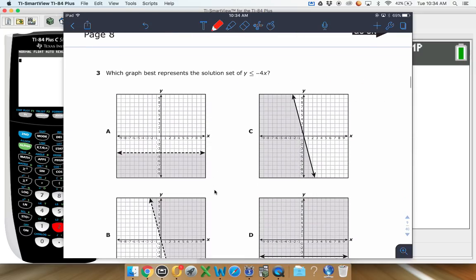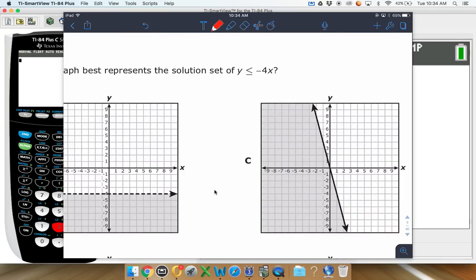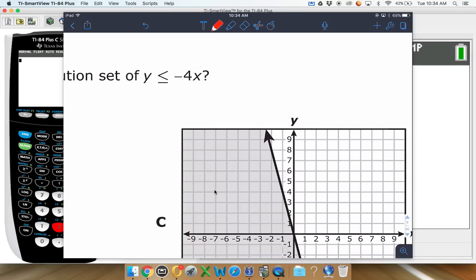So now moving on here, number three, which graph best represents the solution set of y is less than or equal to negative 4x. Alright, so typically with our graphs with two variables, we like to think of graphs as y equals mx plus b.